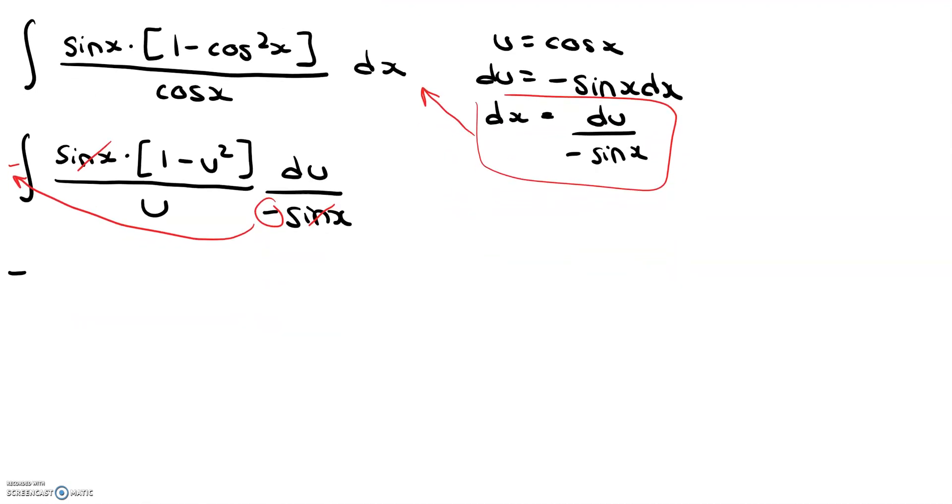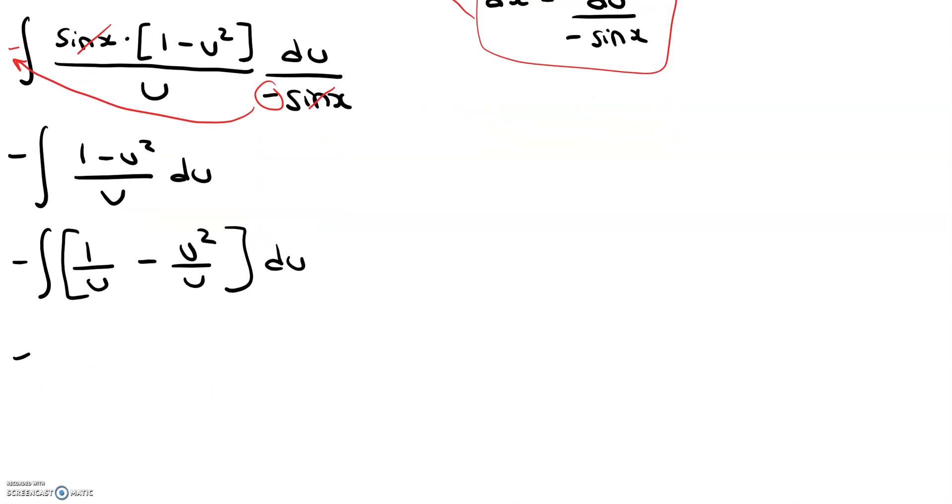Okay, so now we're left with negative 1 minus u squared divided by u du. I can simplify this a bit by writing it as 1 divided by u minus u squared over u. And then I can simplify that a bit more by writing it as 1 over u.